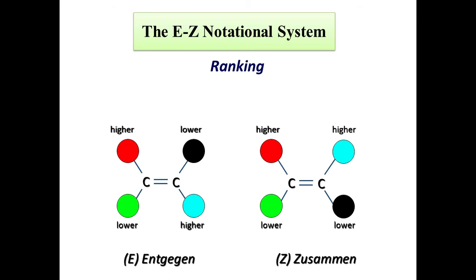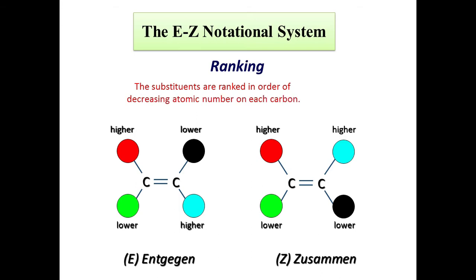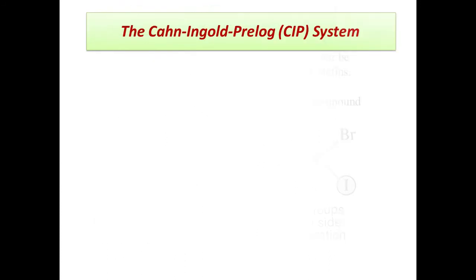Why do we use E/Z notation? The cis-trans system of nomenclature may not be suitable for many tri- or tetra-substituted olefins. For example, when the four groups on the double bond are all different, there are no similar atoms and we cannot determine cis or trans. For such cases we use the E/Z notation based on the Cahn-Ingold-Prelog (CIP) rule.